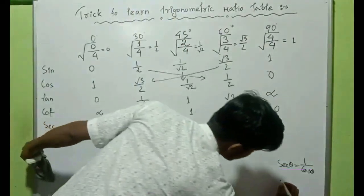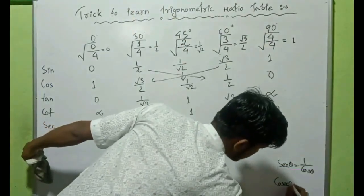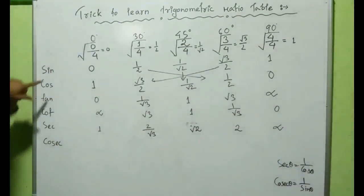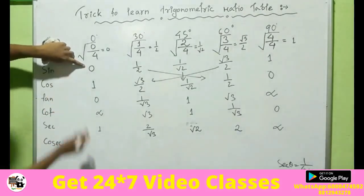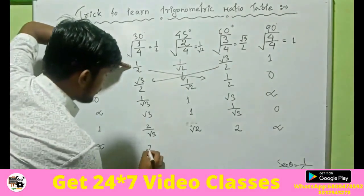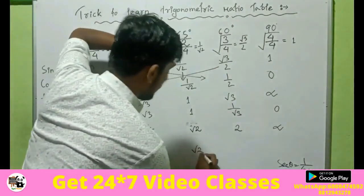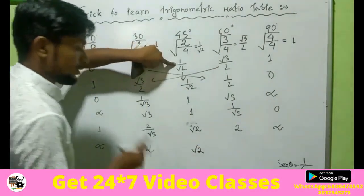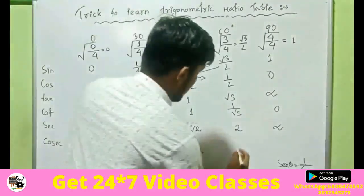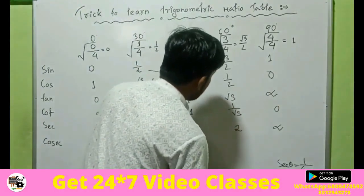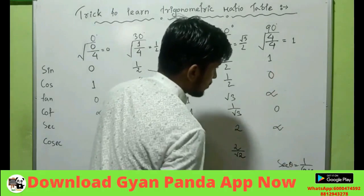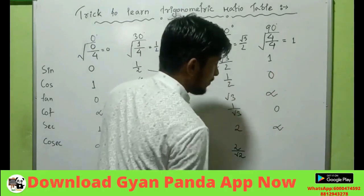Cosec theta means the reciprocal of sin theta. So here it will be infinite; then reciprocal of 1 by 2 is 2; reciprocal of 1 by root 2 is root 2; reciprocal of root 3 by 2 is 2 by root 3; and reciprocal of 1 is 1.